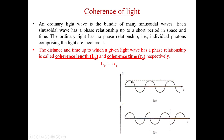For a continuous wave, if we know the phase at one point, we can tell the phase at any other point. So the coherence length of that wave spans its full extent. The distance and time up to which a given light wave retains its phase relationship are called the coherence length and coherence time, respectively. The coherence length can also be described as the length of a single sinusoidal wave train. The relation between them is: coherence length L = c × coherence time, where c is the speed of light in space.